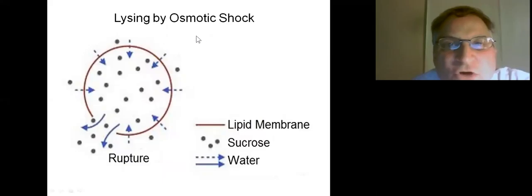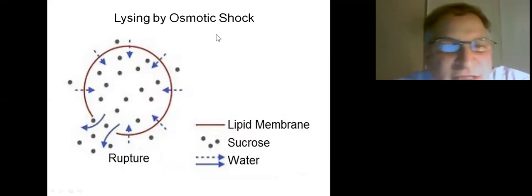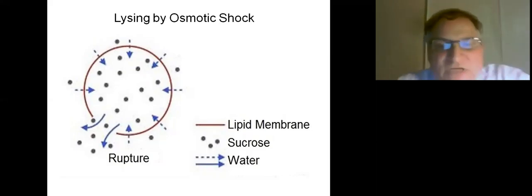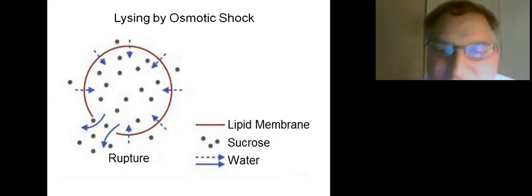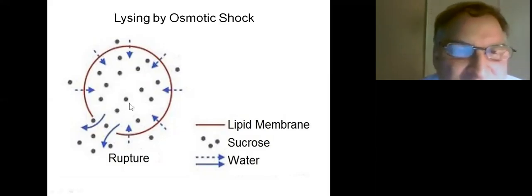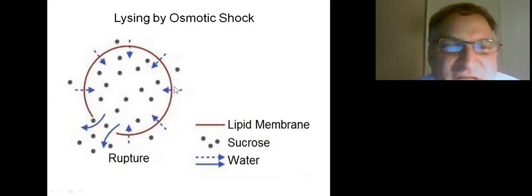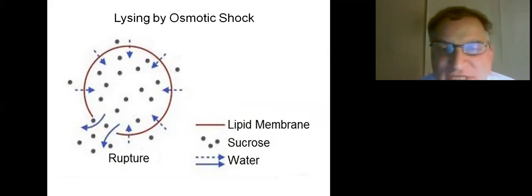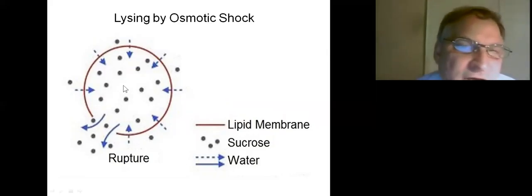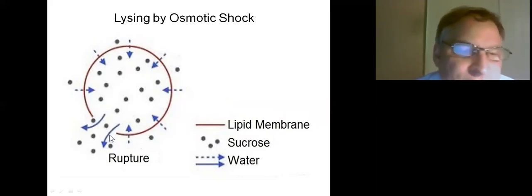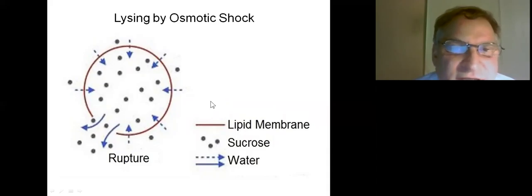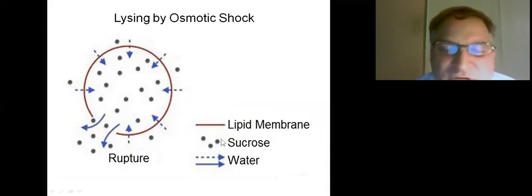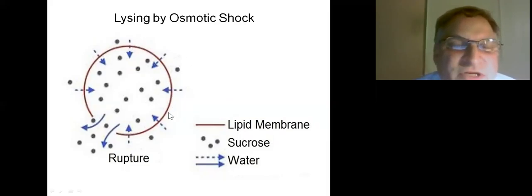For osmotic shock, we spin down the culture, mix the pellet with a sucrose solution so sucrose is absorbed into the cell, spin it down again, then mix the pellet with water. Through osmosis, the water rushes in and bursts the cell, spilling out the Lispro. It doesn't seem to be working well — we've tried chilling the water to make the outer membrane more brittle, but we're still having problems.